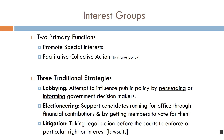How do interest groups go about facilitating collective action to promote government policies that support their special interests? Generally speaking, interest groups have three major strategies: lobbying, electioneering, or litigation. Lobbying is basically an attempt to influence public policy by persuading or informing government decision makers. In a sense, we all lobby — when you cast a vote, you're trying to persuade government decision makers to support certain types of policies. But do keep in mind there is a difference between the amateurish day-to-day lobbying that the average American voter does and professional lobbying.